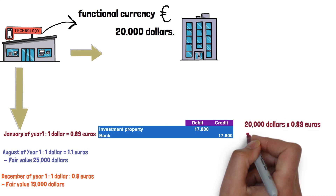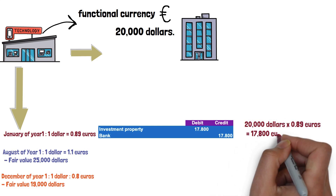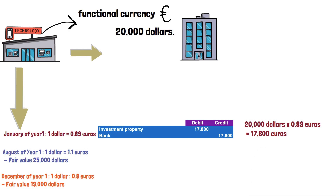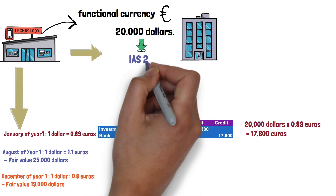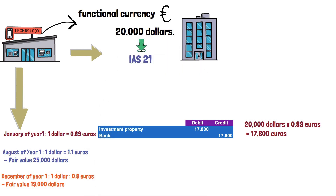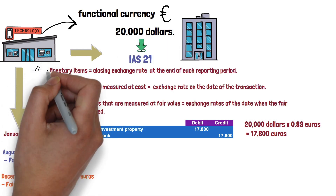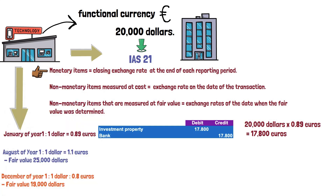Now we are going to recognize the change in the fair value of the investment property. At this point, it is necessary to clarify the following situation. Under IAS 21, an entity translates foreign currency monetary items using the closing exchange rate at the end of each reporting period.